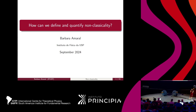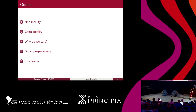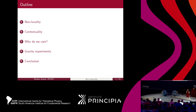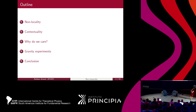I want to discuss how these definitions can help with the question of this event: how do we prove or test non-classical features of gravity? I've chosen two different notions — there are more, but I think these are the most important ones: non-locality and contextuality. I'll define both precisely and try to answer why we care about them and how they can help us study non-classical features of many different things. Then I'll mention briefly what we expect these to help with in gravity experiments, and end with some final remarks.